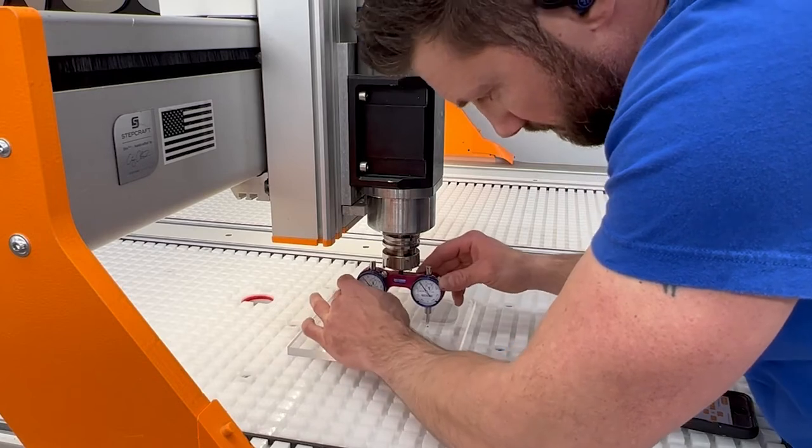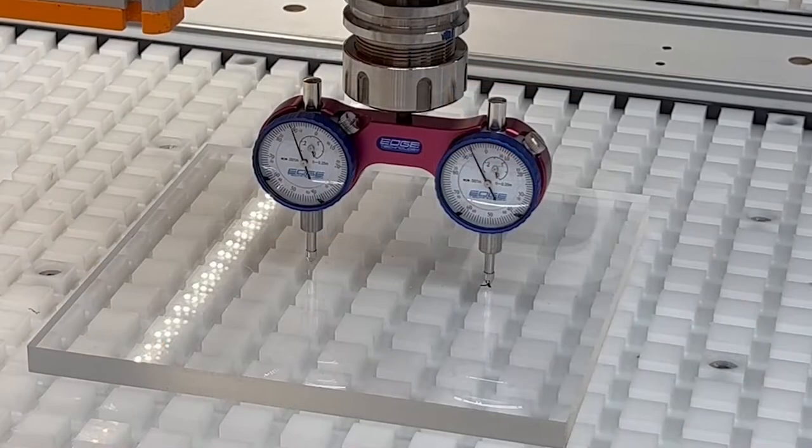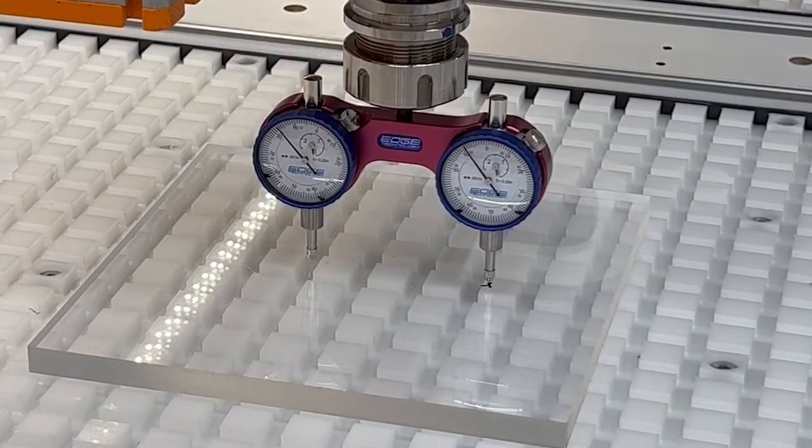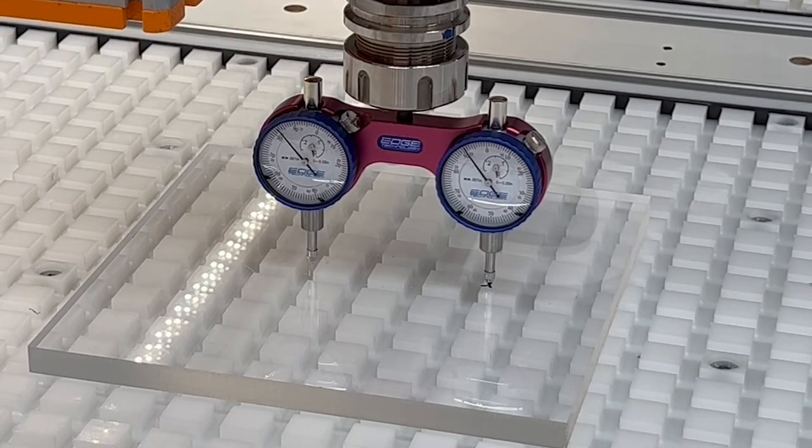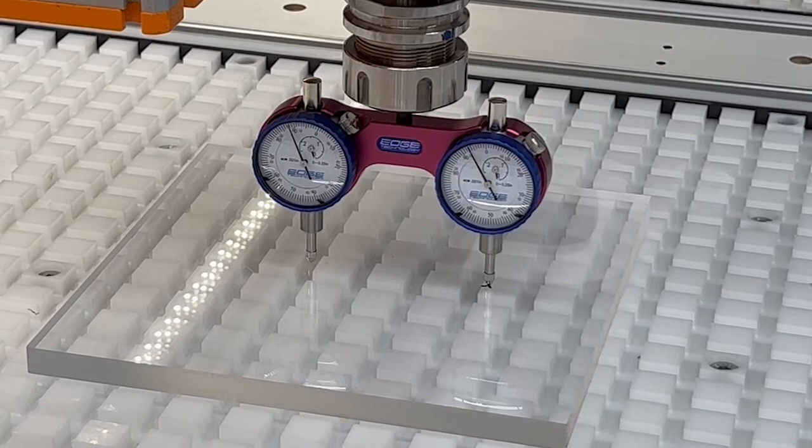For the Stepcraft Q-Series CNC line, always tram your X axis first which means your indicator faces will face either to the left or to the right side of the machine and you'll be making adjustments on the top or the bottom of the spindle.